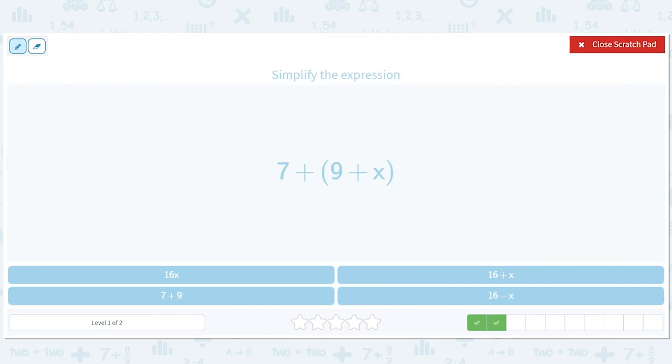Alright, same thing. By associativity, if we group differently, is 7 plus 9, x plus 9 plus x. So that's 16 plus x. This is 16.